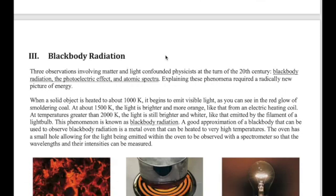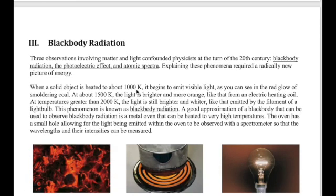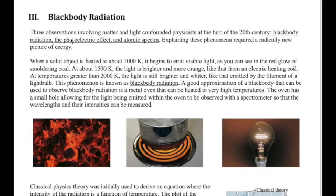We're going to start by looking at the first phenomenon which is referred to as blackbody radiation. This is an observation associated with things that are heated up to very high temperature. If you were to start heating things — more like metals — you start to see that the object will emit light. For example, if you burn paper, at some point you're going to see some type of embers or light coming out, or maybe coal if you've ever seen coal burning in a barbecue grill.